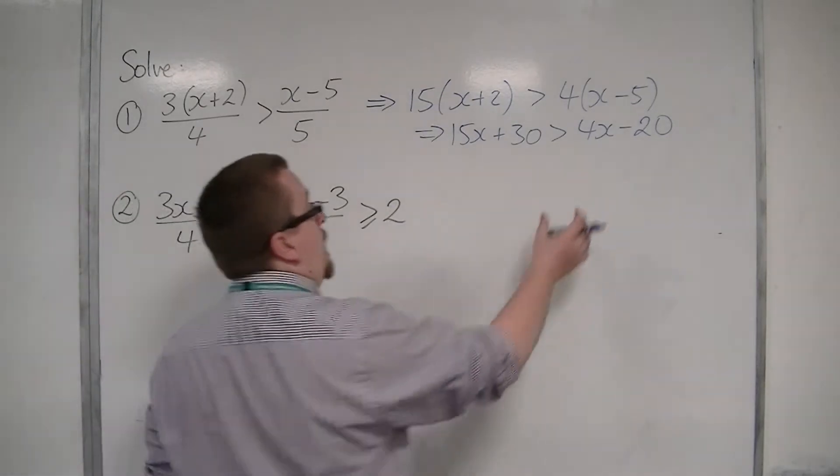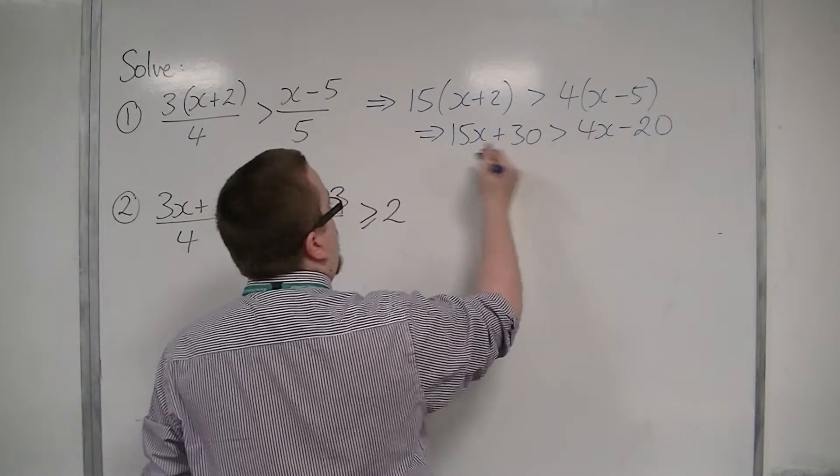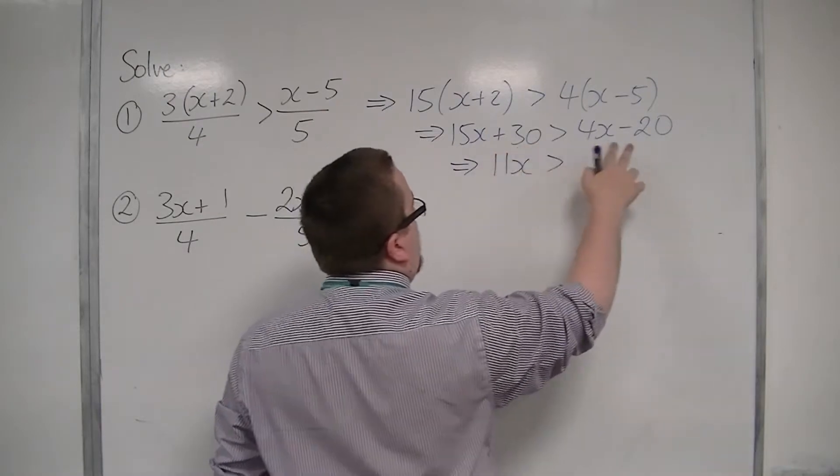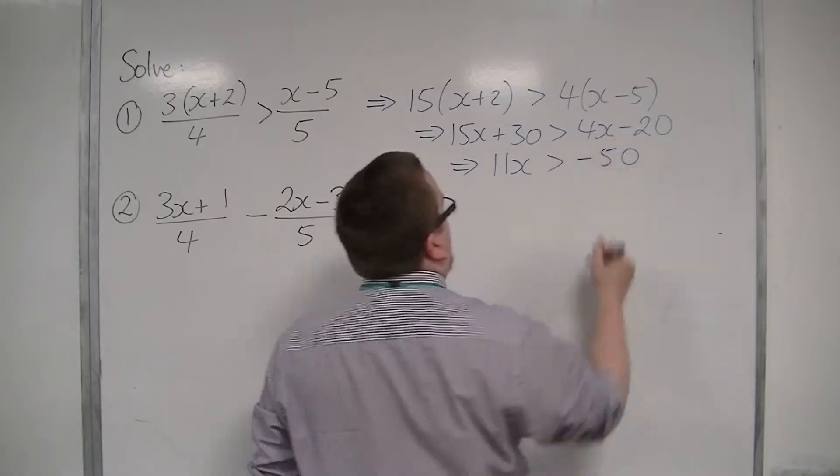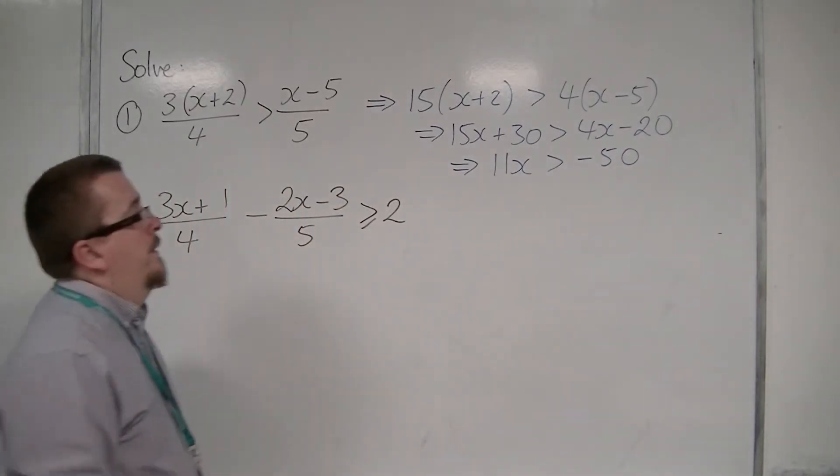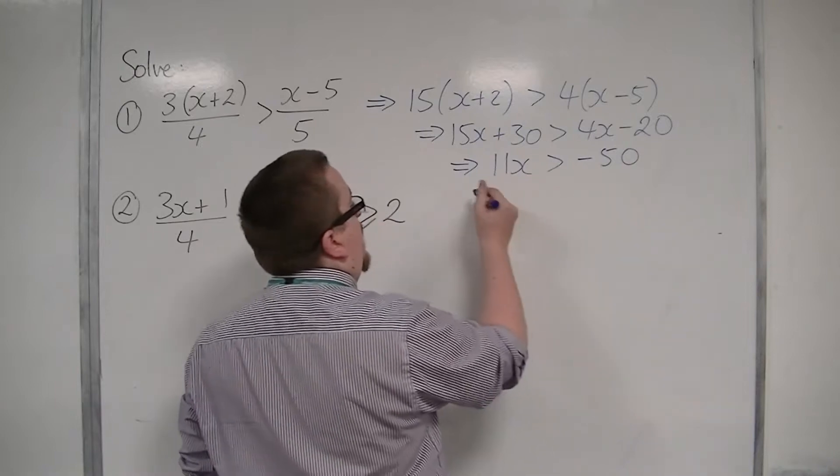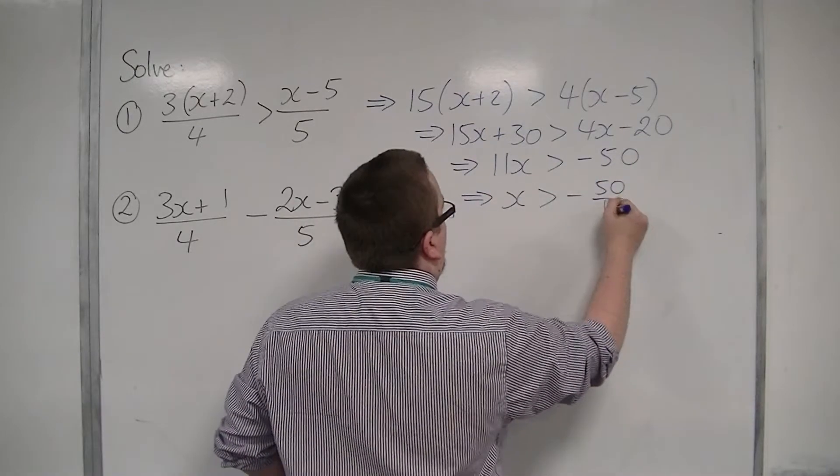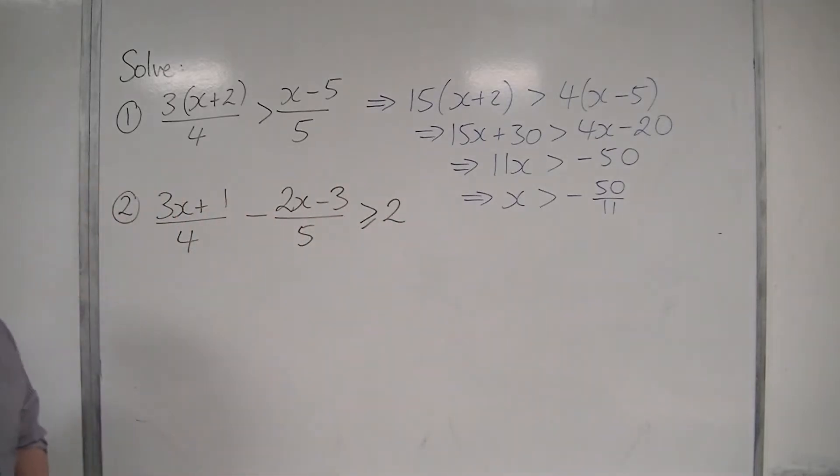So if I take 4x from both sides, and I take 30 from both sides, I'm going to have 11x is greater than minus 50. And then I can divide both sides by 11. And that would be my final answer.